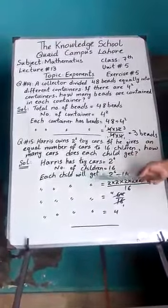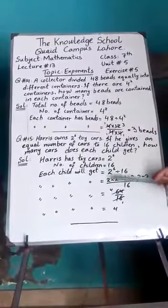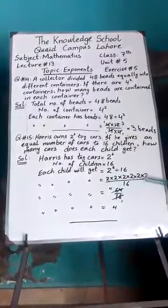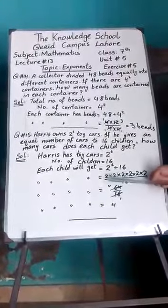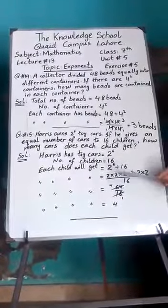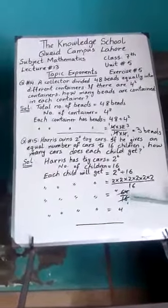Each child will get 2 raised to power 6 divided by 16. Students, 2 raised to power 6 means we will multiply 2 six times, divided by 16. Now if we use the table: 2 twos are 4, 4 twos are 8, same 2 twos are 4, 4 twos are 8, 8 eights are 64.